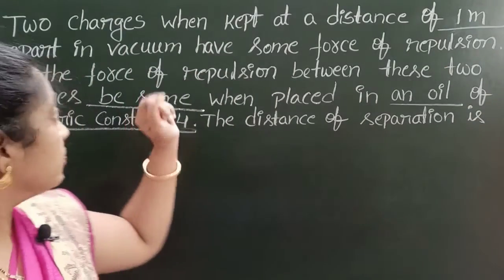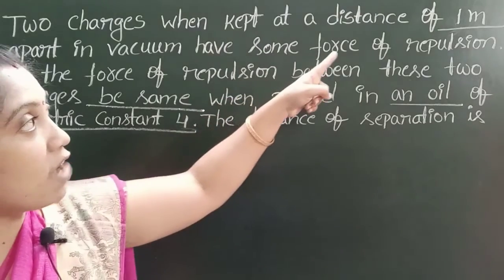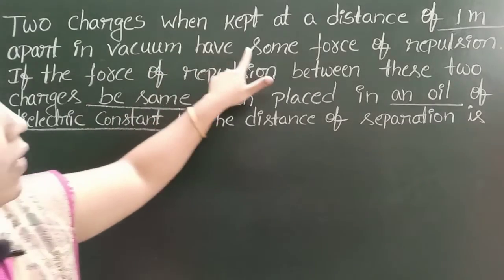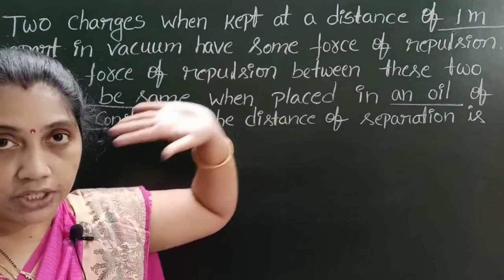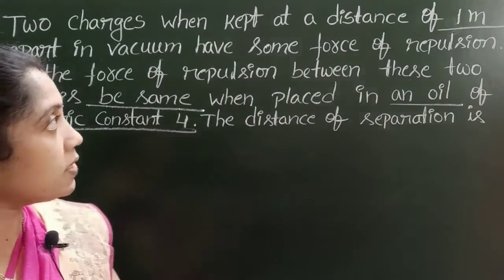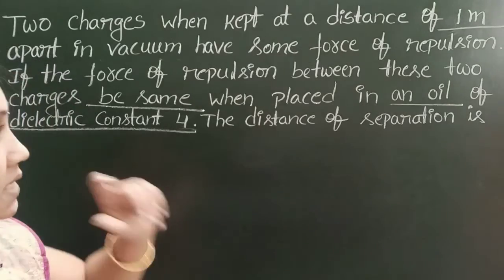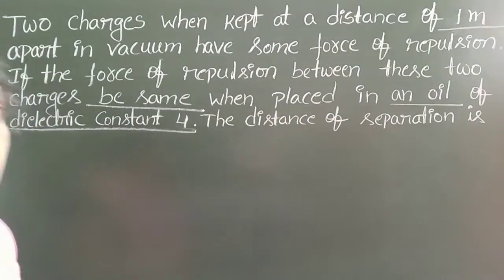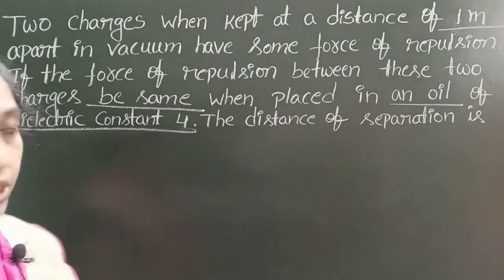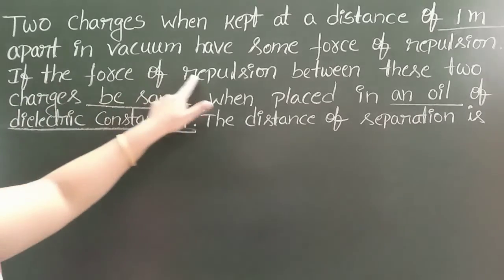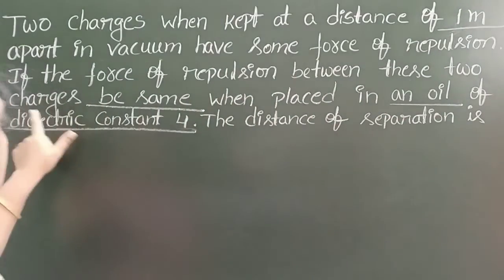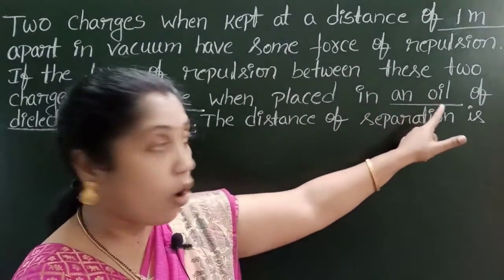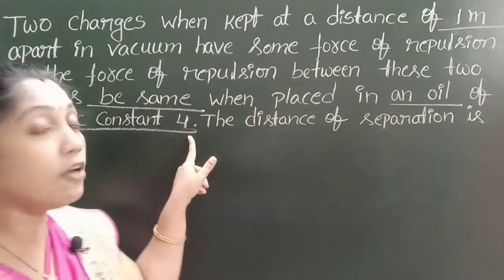Two charges, when kept at a distance of 1 meter apart in vacuum, have some force of repulsion. When two charges are placed in vacuum at a distance of separation of 1 meter, they repel each other with some force of repulsion. If the force of repulsion between these two charges is the same when placed in an oil of dielectric constant 4,